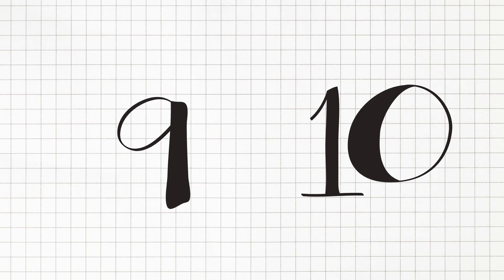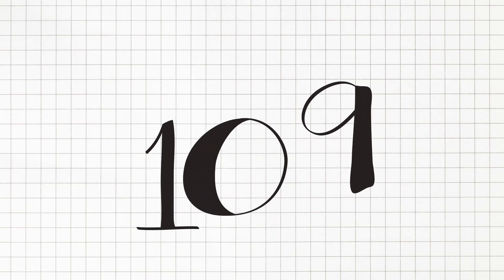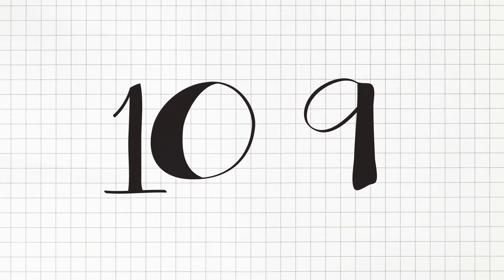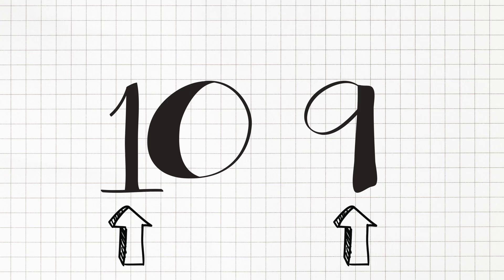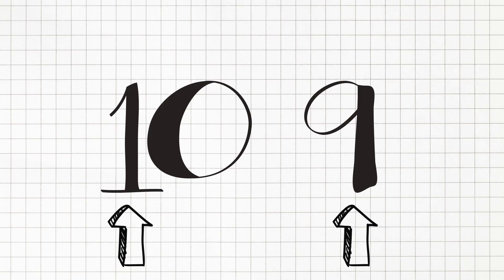When it encounters two numbers, say for example the number 10 and the number 9, it actually ranks 9 as coming sequentially after 10, because it's comparing the first digit it encounters — the 1 versus the 9.